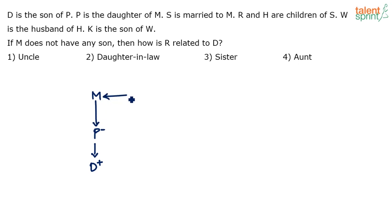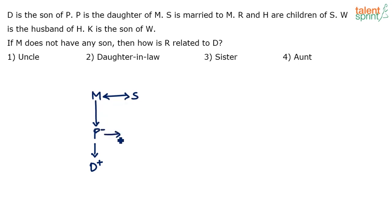S is married to M, so S and M are a married couple. We are not sure whose husband and whose wife here — M can be husband with S being the wife, or vice versa. R and H are children of S, meaning R and H are also children of M, which means R and H are siblings of P. So P, R, and H — all three are children of M and S.